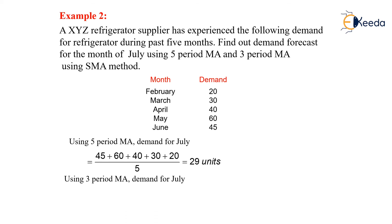Now coming to the major question, which is the three-month moving average. For the three-month moving average of July, we are taking the summation of June, May, and April, which is 45, 60, and 40, divided by 3, giving us around 48.33, which when rounded off gives us 49 units. Hence the demand for the five-month moving average is 29 units, but for the three-month moving average the demand has raised up to 49 units.